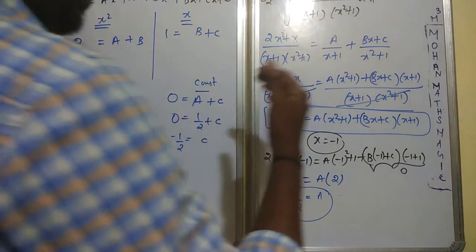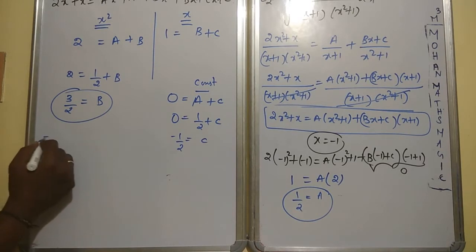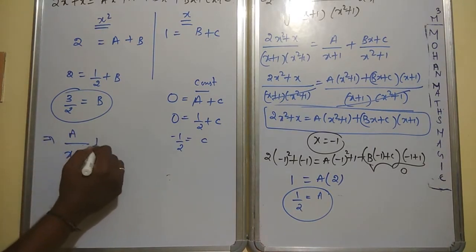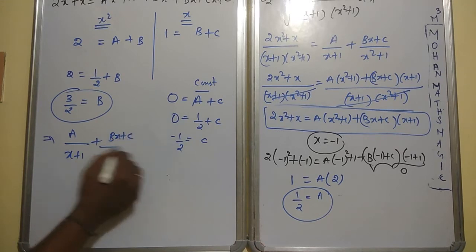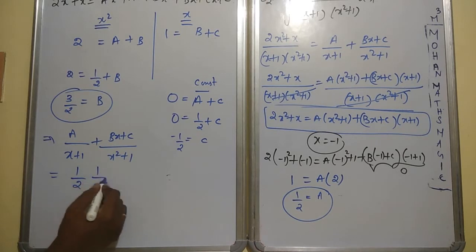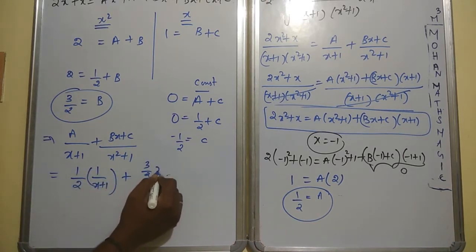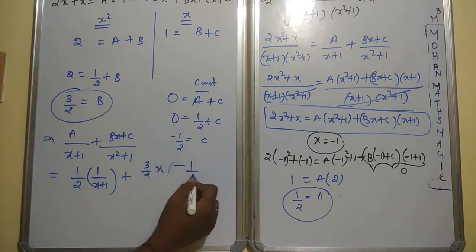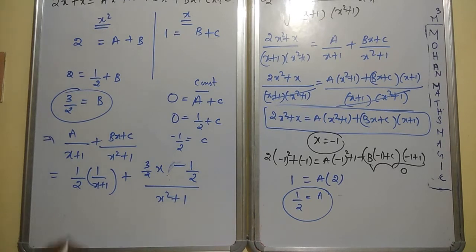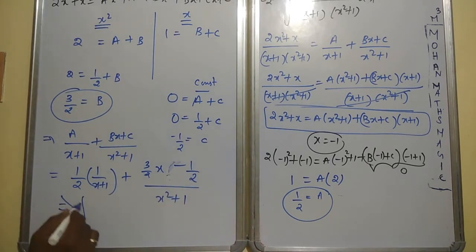Substitute these values back into the partial fraction. So 2x²+x over (x+1)(x²+1) = (1/2)/(x+1) + (3x/2 - 1/2)/(x²+1). Separate the second fraction as father upon child minus mother upon child. Now integrate: (1/2)∫1/(x+1)dx + (3/2)∫x/(x²+1)dx - (1/2)∫1/(x²+1)dx.